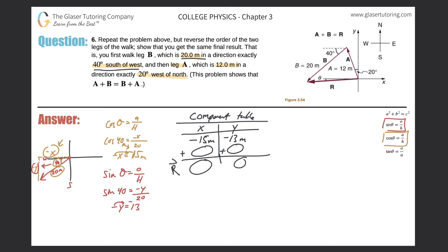Now let's do the second vector. Create a new set of axes. The second vector says we move 12 meters in a direction exactly 20 degrees west of north, which would look like a line drawn here, 20 degrees west of north, with a value of 12. Now I want to solve for the components of this vector. It looks like I would have a positive y component and a negative x component.